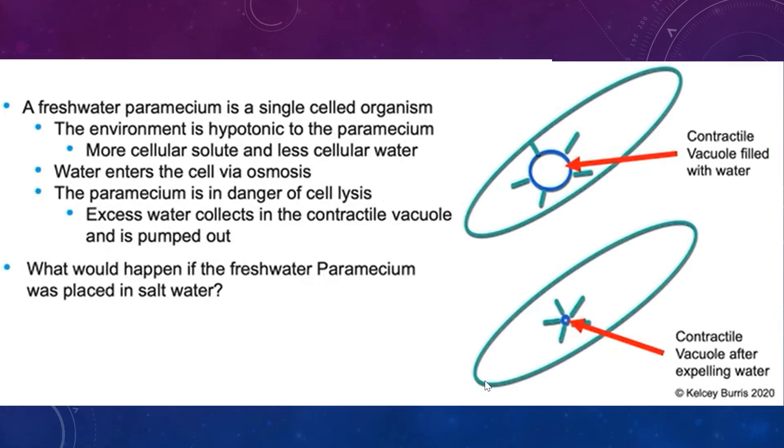So here's an example of a way that an organism can adapt. This is not a plant, this is a paramecium, so it's an animal cell. So how it can use our vacuole, a contractile vacuole, to help in our different types of solution. So we can have a freshwater paramecium in an environment that it's able to survive.